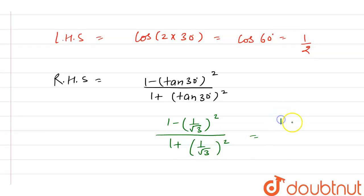Now, if we solve this, we get 1 minus 1/3, because the square of 1/√3 is 1/3, and in the denominator it's 1 plus 1/3.